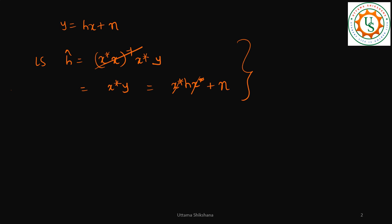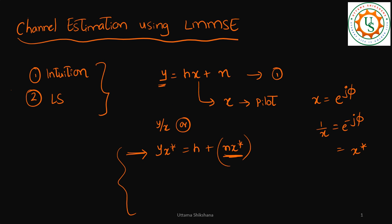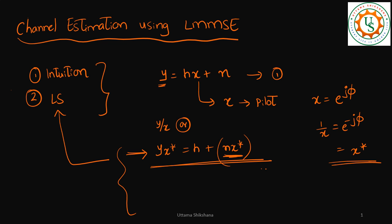Since this is a scalar quantity we can shift it, and even in vector form we can easily derive this — as done in the previous video. This gives us just x times h plus n times x conjugate, which is similar to what we saw with the intuition solution. So the intuition equation we thought of is actually the least square equation if we design the pilots in a certain way.